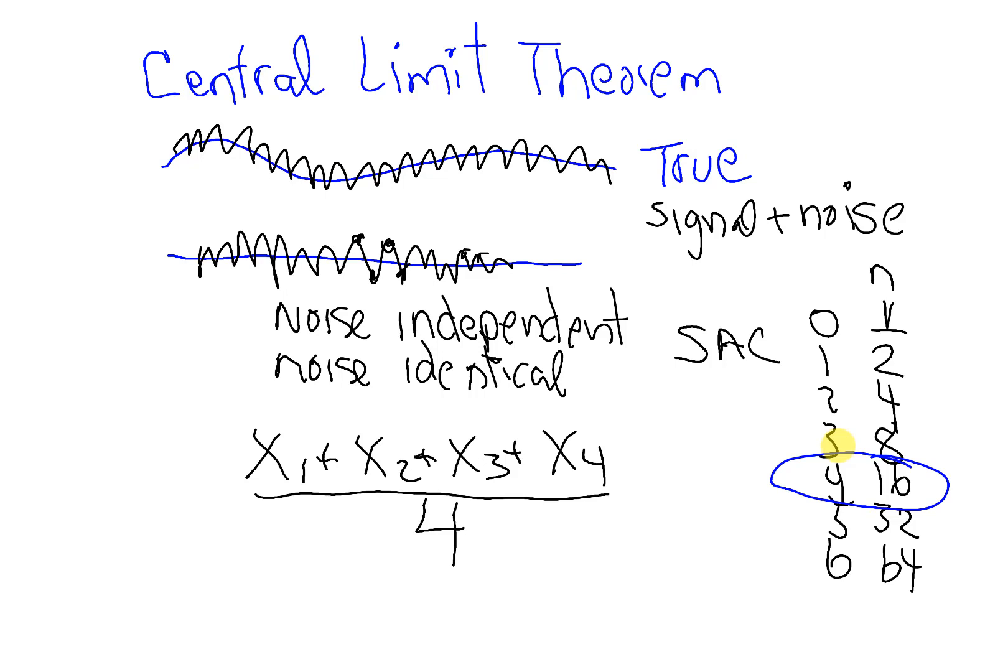Now, what the Central Limit Theorem will tell us, two things. First of all, it will tell us that the average, let's call this x bar, and let's call this true value mu, that this average will approach mu, which is perfect. So the sample data averaged together is going to produce the true value.